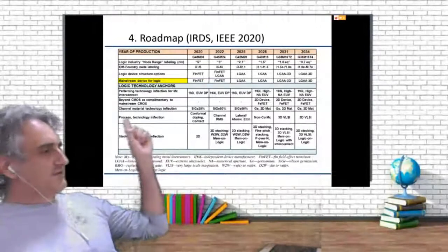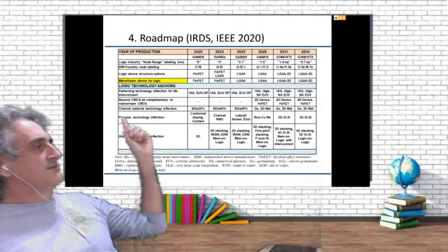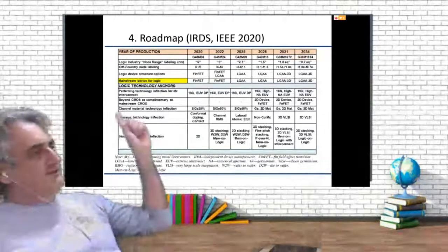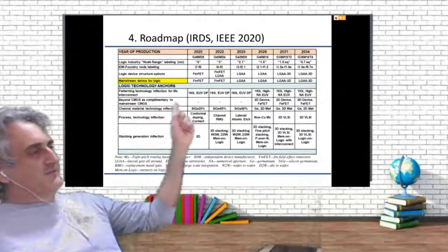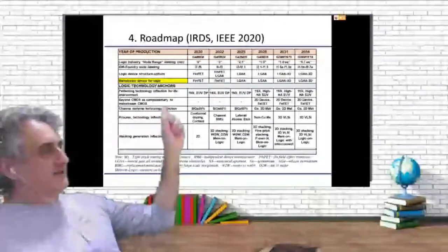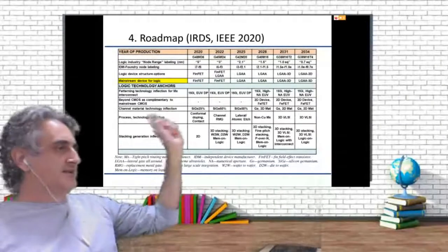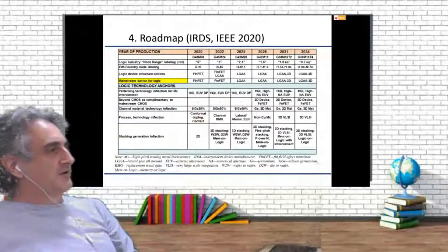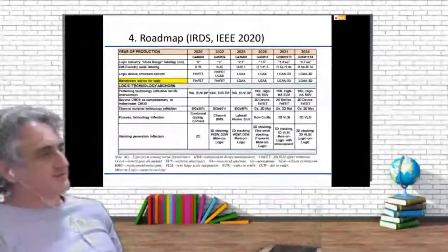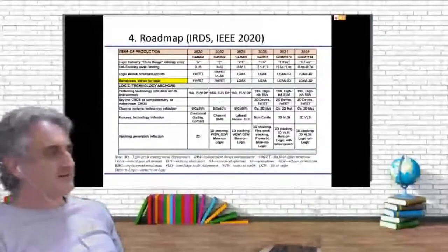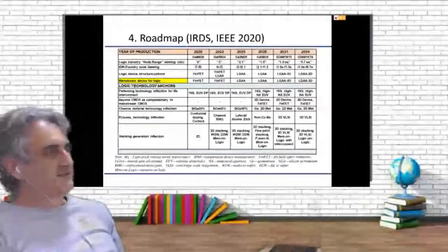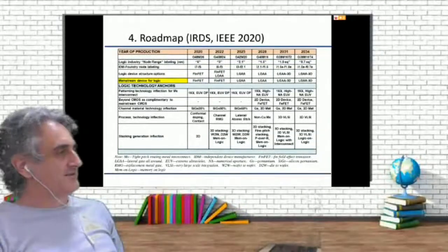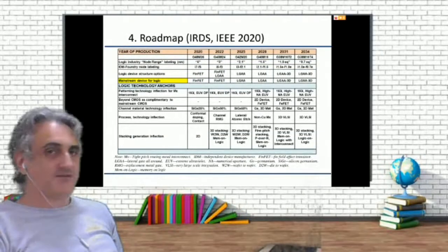Here you have what they call logic device structure options. You can see FinFET, gate-all-around, lateral gate-all-around, and lateral gate-all-around 3D. It seems that by the end of the decade, everybody agrees that the lateral gate-all-around is going to be the key technology. Now we are using FinFETs.